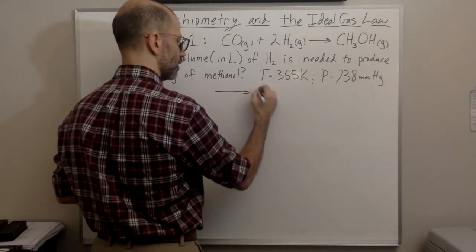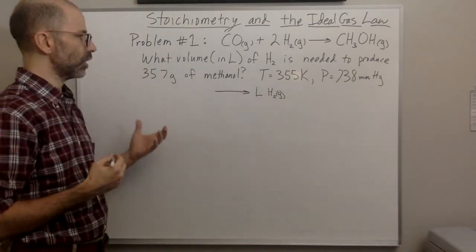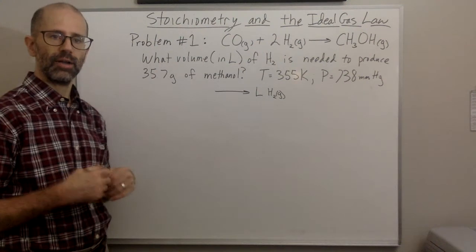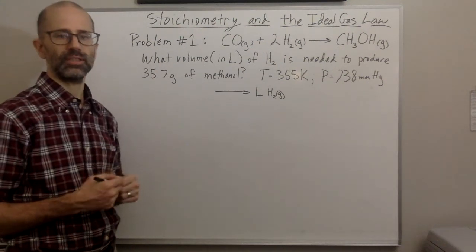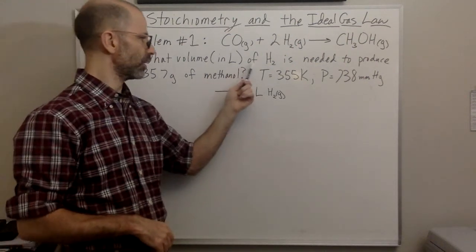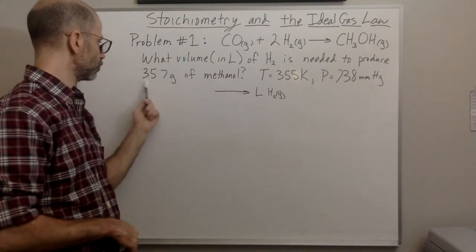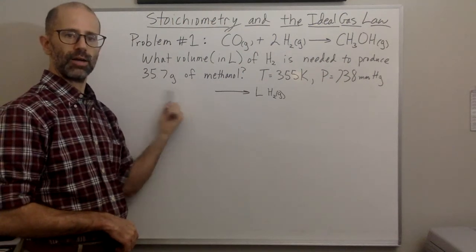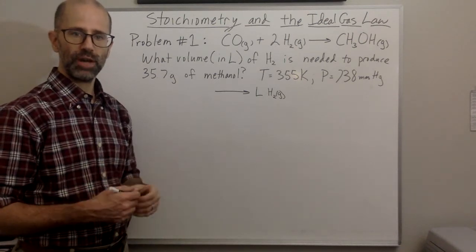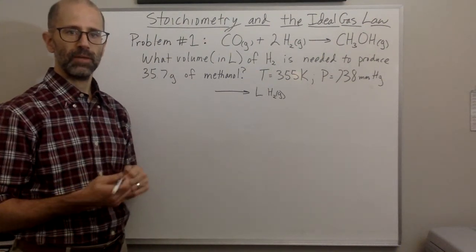You need liters of H2 gas — that's where you've got to go. Where are you going to start? A large majority of the time the end of the question is telling you where to begin. So the question says what volume in liters of H2 gas — that's where we end — is needed to produce 35.7 grams of methanol. That's our beginning. Everything else is conversion factors or equations you can use to convert from one thing to another.